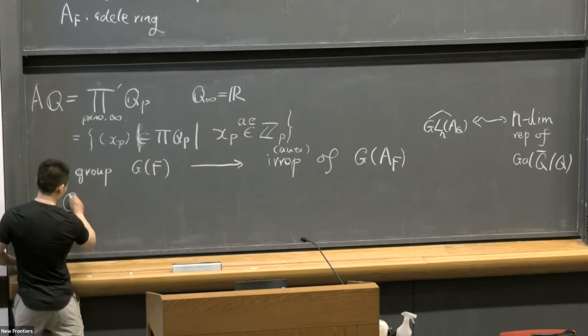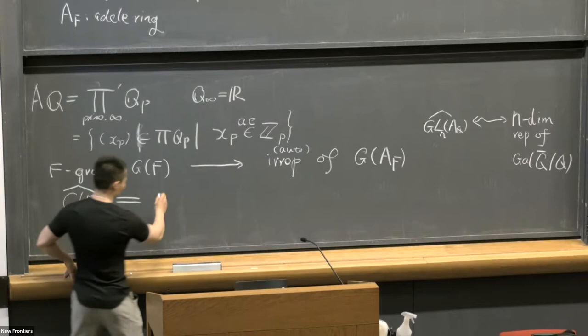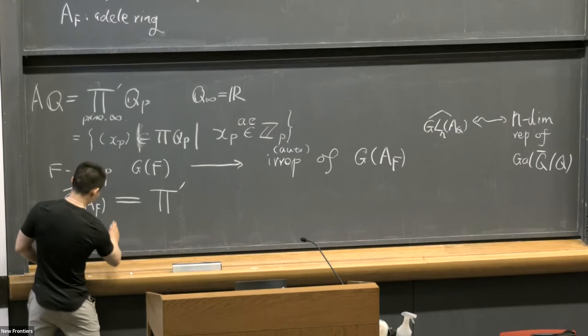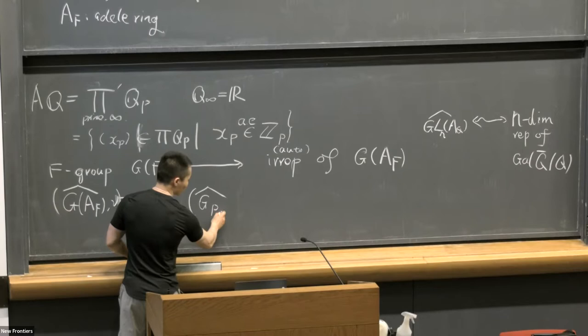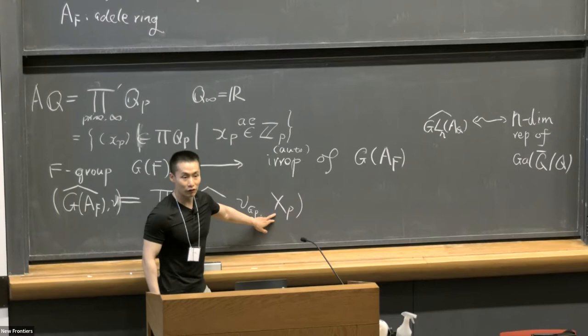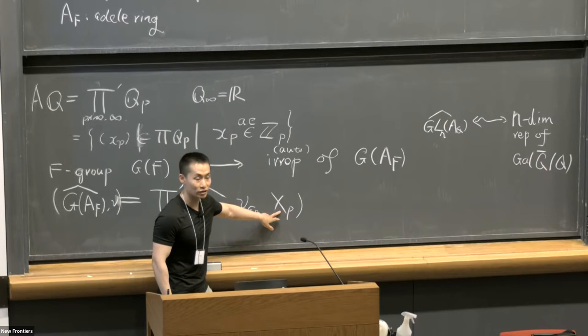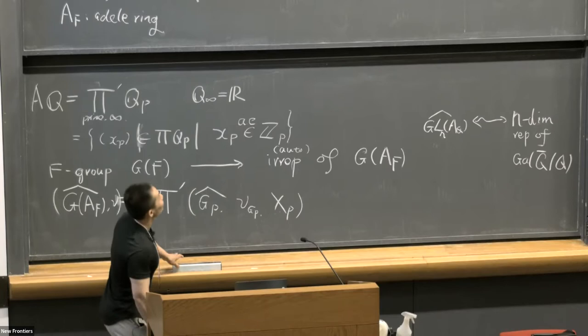So now a natural question is: what is the Plancherel measure of this group, G(A) hat? I can show that the Plancherel measure of the adelic group—I think this result is implicit in the 1960s—is the restricted product of the following measure spaces: the Plancherel measure of the local group with respect to the set of unramified representations. It's well-defined to take the restricted product.